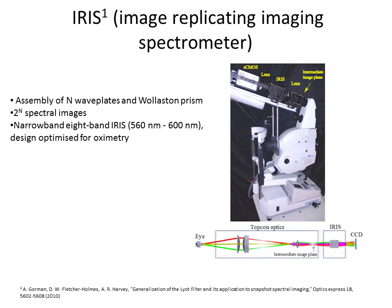So basically IRIS is an assembly of waveplates and Wollaston prisms that multiplexes one image into a set of spectrally distinct images. In our case, we obtained 8 images with 8 distinct wavelengths.